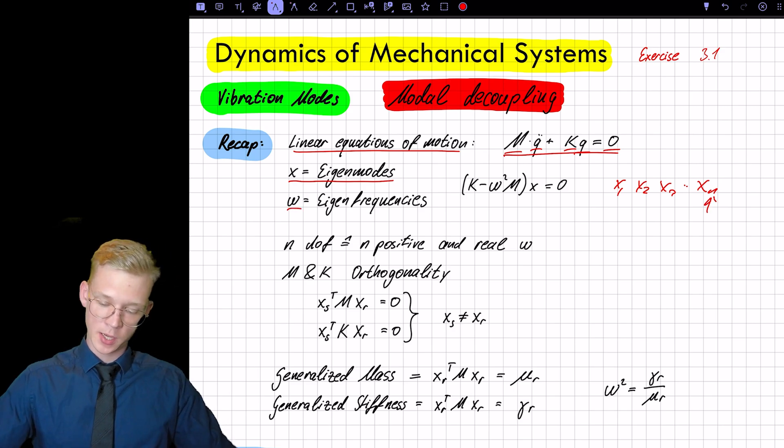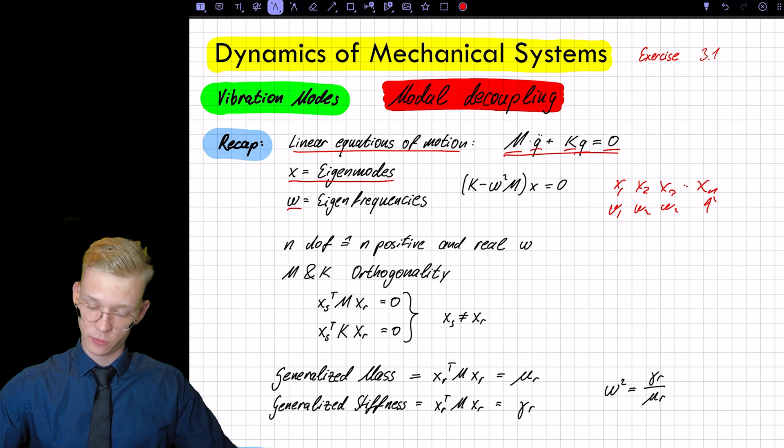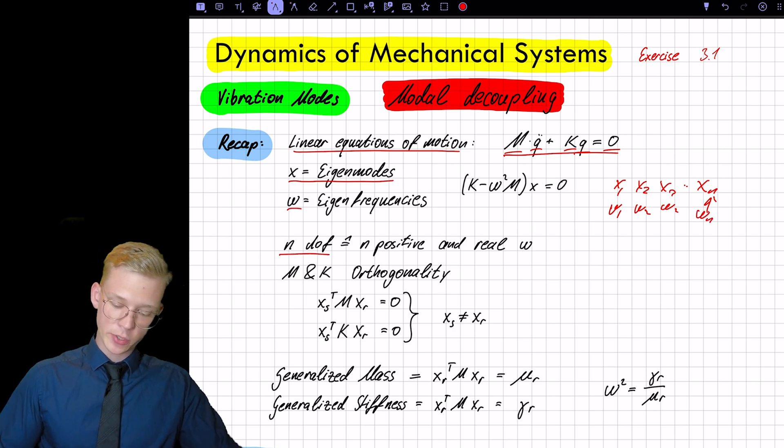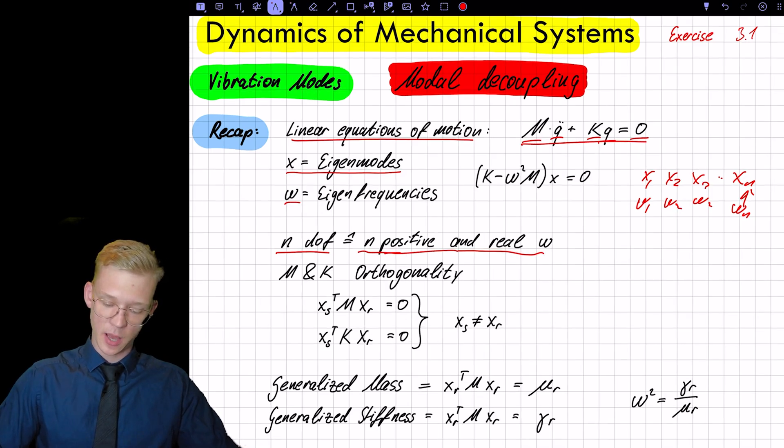And we have our omegas that are our eigenfrequencies. So we also have omega 1, omega 2, omega 3 and so forth to omega n. So we have n degrees of freedom and that means that we have n positive real eigenfrequencies.